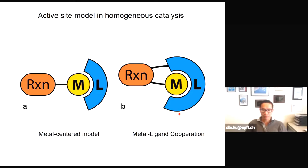In recent years, the metal-ligand cooperation model has been increasingly recognized in homogeneous catalysis, where ligands are no longer spectators — they can directly be involved in bond making and bond breaking events. This metal-ligand cooperation model is not only fundamentally interesting but also opens up new ways of catalyst design and tuning.